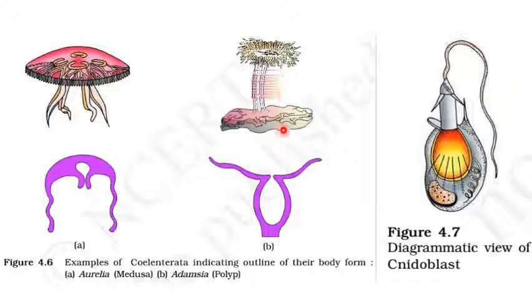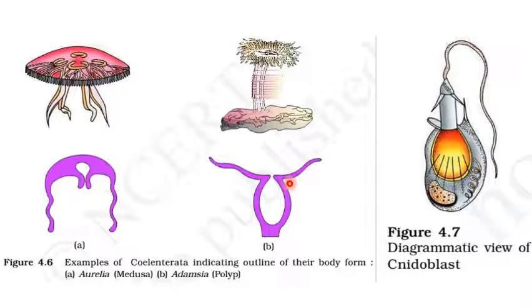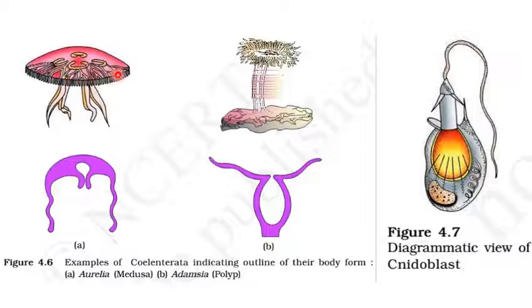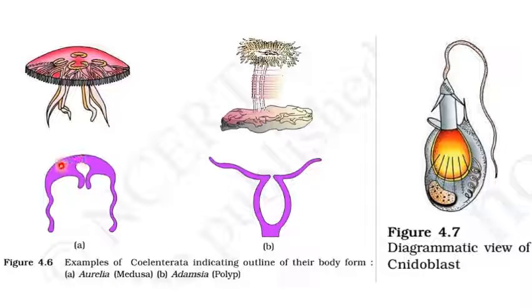Looking at the diagrams of the two body forms: the polyp — like Adamsia — has a mouth at the oral surface with surrounding tentacles, and is sessile. The medusa — like a jellyfish — is umbrella-shaped with tentacles at the margins; it has statocysts (balance organs), gonads (shown in yellow), and is free-swimming. The mouth is at the ventral lower end on a raised portion called the manubrium, facing towards the water.